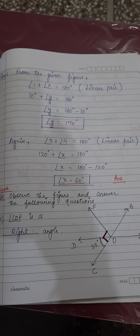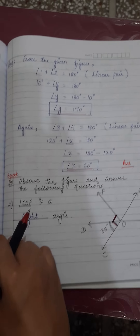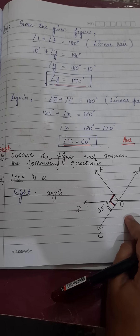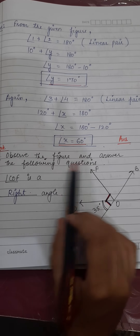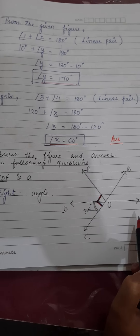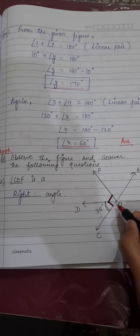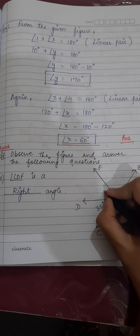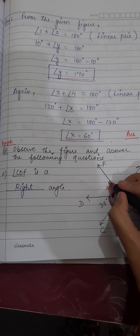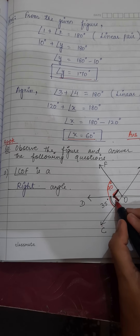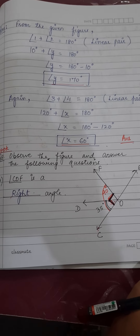Now let's move to question number 8, which you do in your book — this is fill in the blanks with a figure given. First: angle COF — when the right angle symbol is given, this angle is 90 degrees, so angle COF is a right angle. Second: angle DOC = 35° and angle BOE = 35°. Since they are equal and opposite to each other, angle DOC and angle BOE are vertically opposite angles.